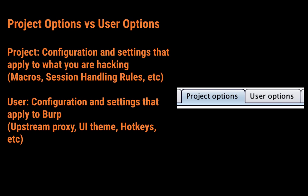In Burp you have project options and user options, and a lot of people mix them up. Project options is configuration and settings that apply to the application that you're hacking — for example, you can configure macros, session handling rules, and everything related to what you are hacking. User options applies to the settings within Burp itself, for example the upstream proxy, UI theme if you want the dark theme, hotkeys, shortcuts, and so on.